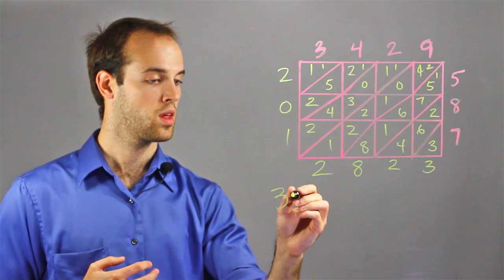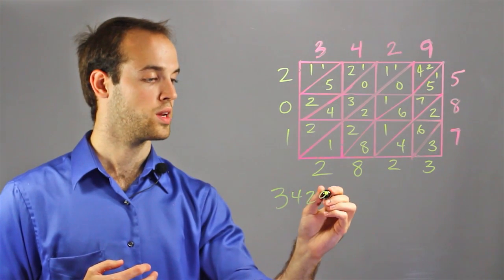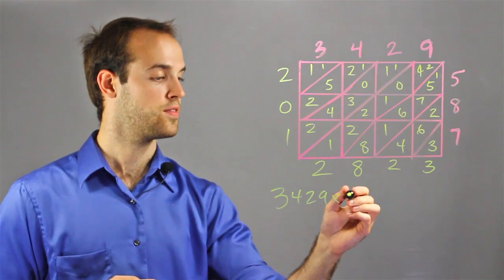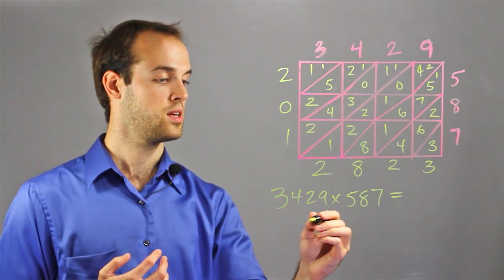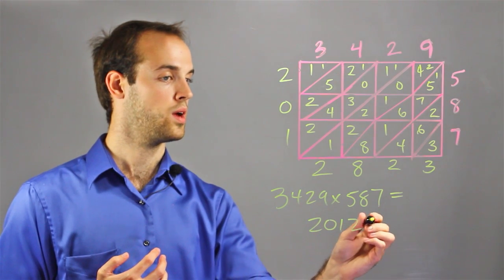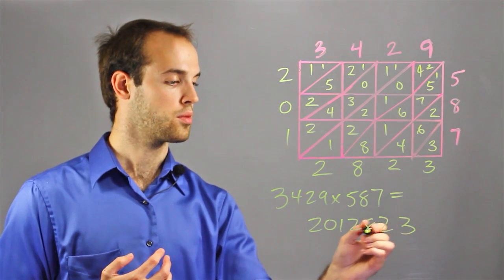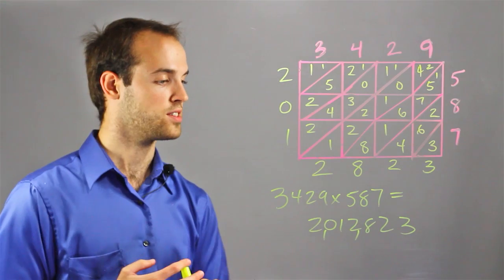So, 3429 times 587, using the lattice method of multiplication, is 2,012,823.